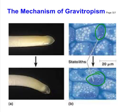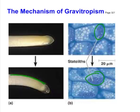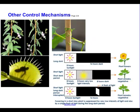What happens again is the cells on the opposite side grow a little bit faster and a little bit longer, and so the root tends to head down towards gravity.